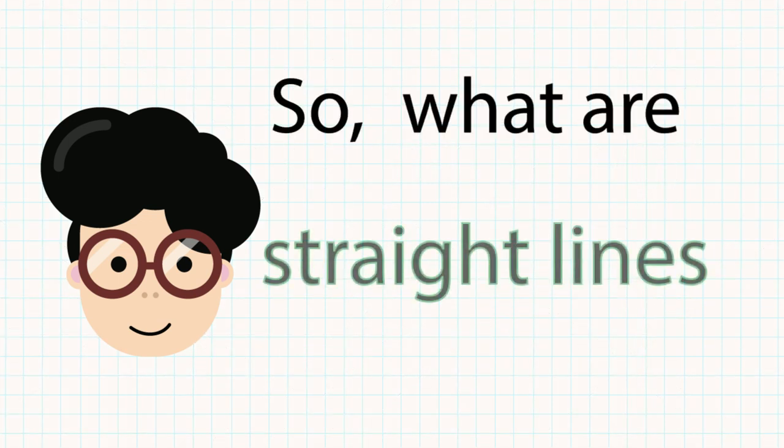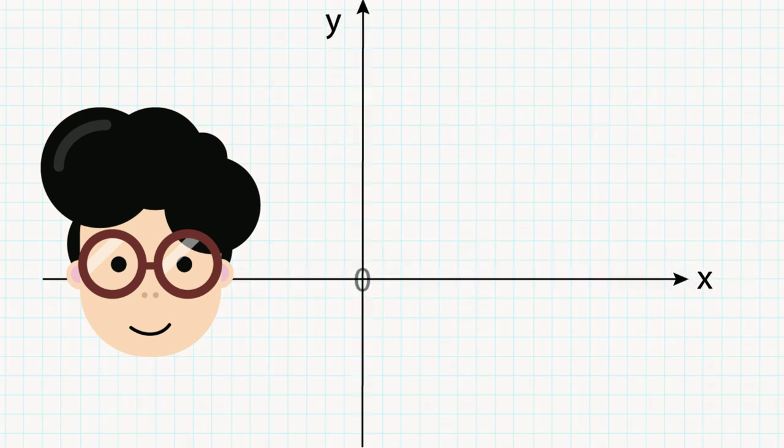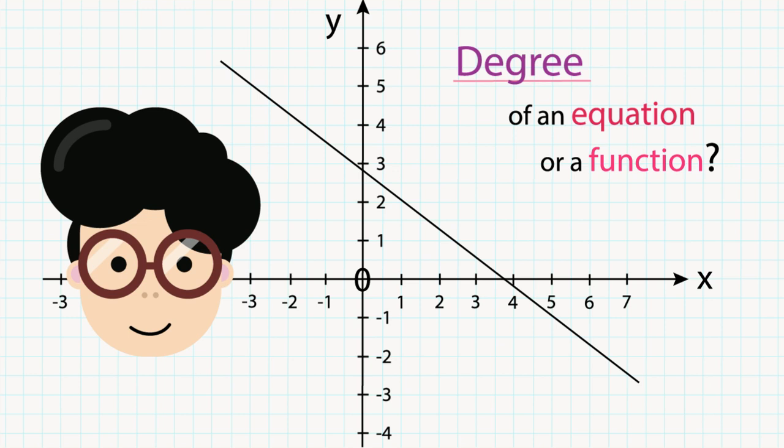So, what are straight lines? They are the graphs of first-degree algebraic functions. Then what is the degree of an equation or a function? Degree is the highest power of x that the equation or function has.